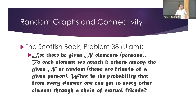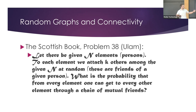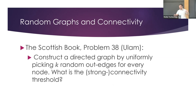One problem listed as Problem 38, written by Ulam, is the following. Given N elements thought of as persons, to each element we attach K others among the entire N elements at random — thought of as friends of that person. What is the probability of every pair of people having a directed chain of friends between them? We can phrase it today as: construct a random directed graph by picking K uniformly random outgoing edges out of each node, and ask what is the probability that this is strongly connected.